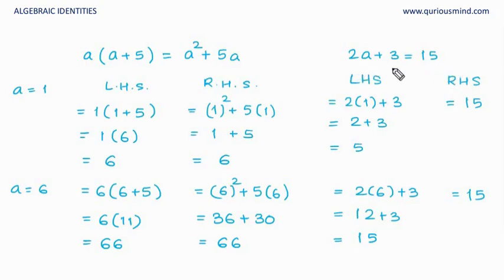If I take any other value of variable a, this equation would not be valid. Whereas, in this case I take any value of a, I take 1, 2, 3, 4, 5, 6, 7, 8, any value of a, we will find that LHS is always going to be equal to RHS. The reason is very simple because we have just simplified the left hand side to get the right hand side.